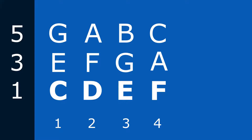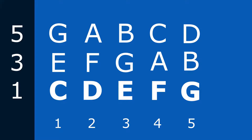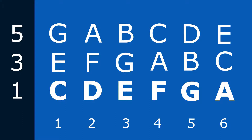Then we go to the fifth scale degree, which is G. To build a chord from that, we need a 1, 3, 5: G, B, D — which gets us a G major chord. The sixth scale degree is A: when we build a chord from that — A, C, E — the sixth chord is A minor. So we're just using the C major scale and from each note of that scale, we need a 1, 3, 5 to build a triad.